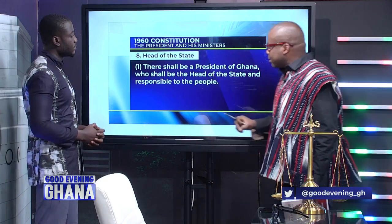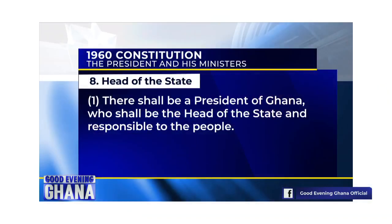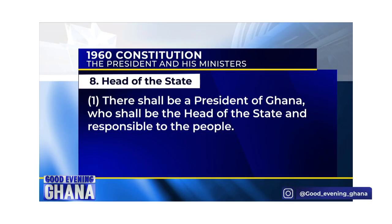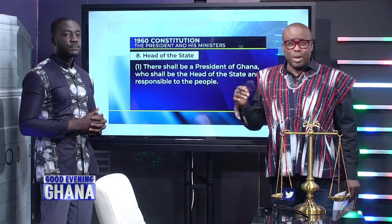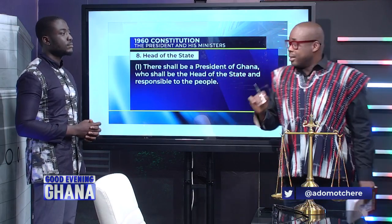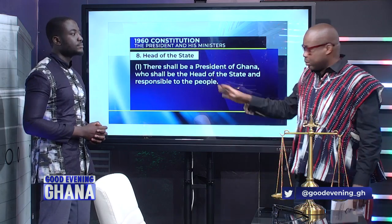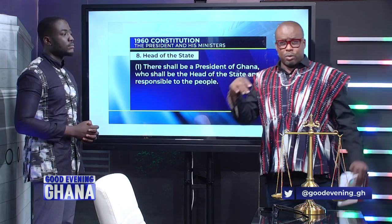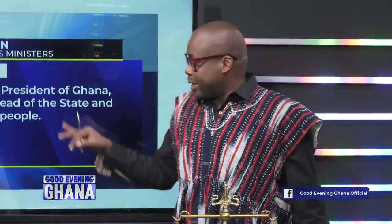Article 8 states: 'There shall be a President of Ghana who shall be the head of state and responsible to the people.' The reason they had to put 'head of state' there was to indicate clearly that the Queen was no longer the head of state of Ghana, because before this Constitution, what you had was a parliamentary constitution where Kwame Nkrumah was the Prime Minister and head of government, but the Queen was the head of state.